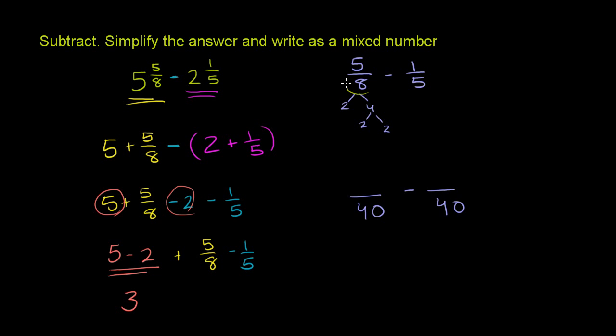Now, to go from 8 to 40, you have to multiply by 5. Then we have to do the same thing to the numerator. If we multiplied 8 times 5, you have to multiply 5 times 5, to get 25. So in either case, we're multiplying times 5, the numerator and the denominator.